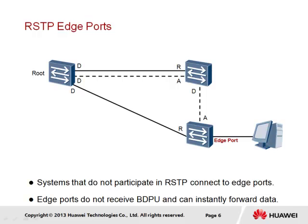The RSTP edge port is designed to allow ports on an RSTP-enabled switch that connects to non-STP devices, such as end stations, to instantly transition to a forwarding state. This is done to prevent unnecessary forwarding delay to the end station, since devices connected to edge ports do not participate in STP and therefore will not generate switching loops.